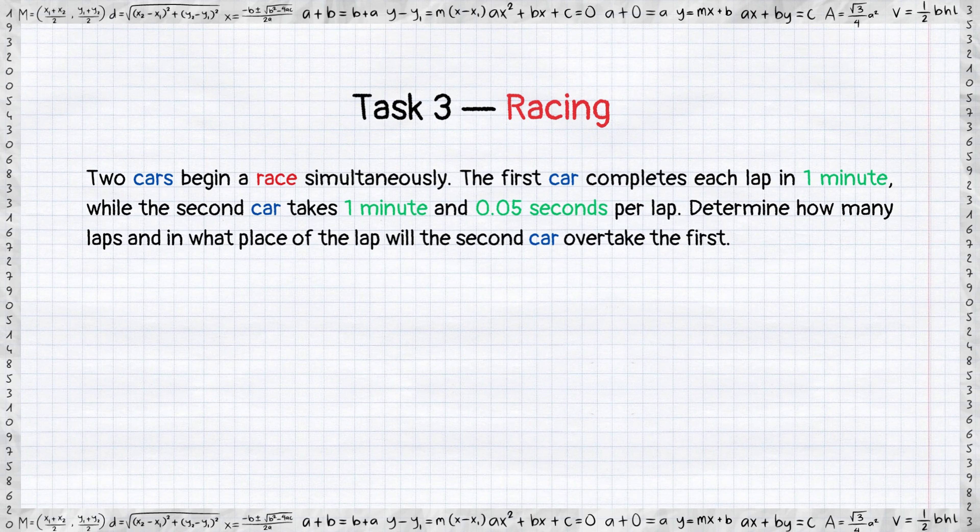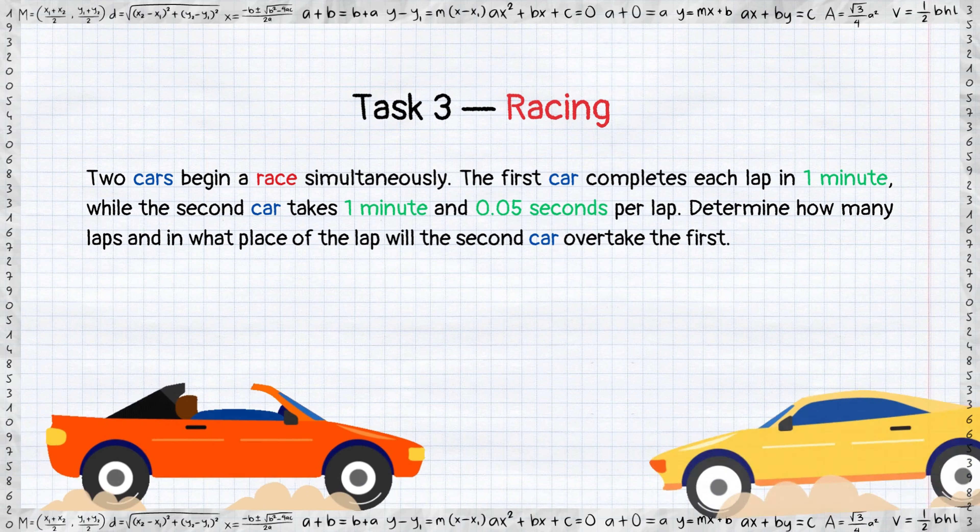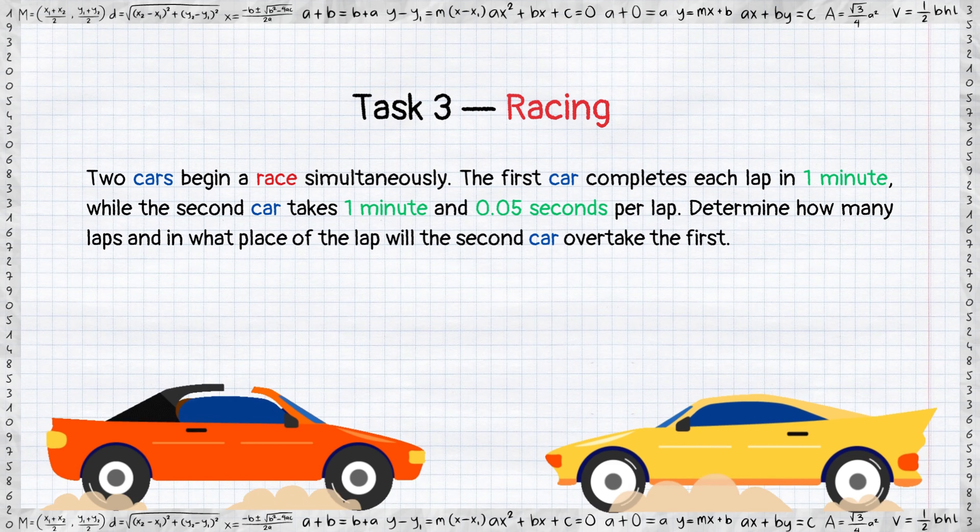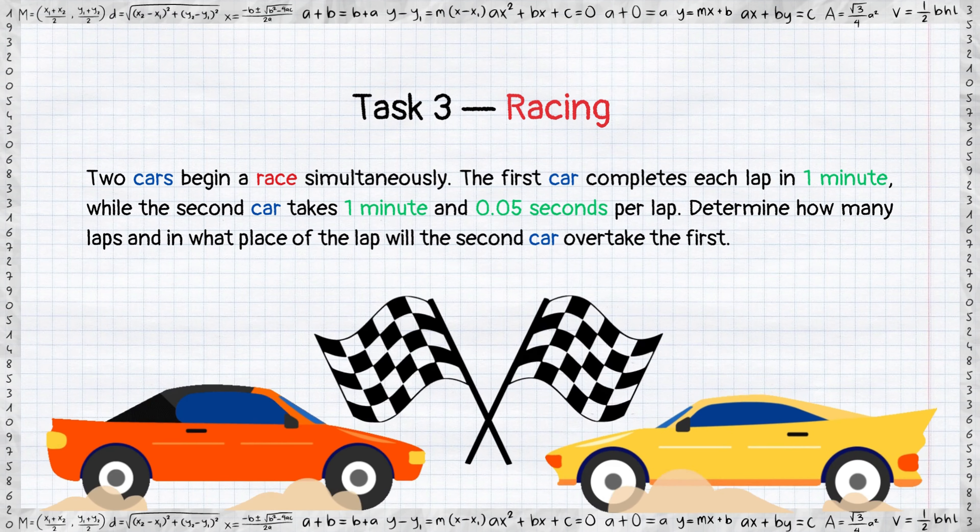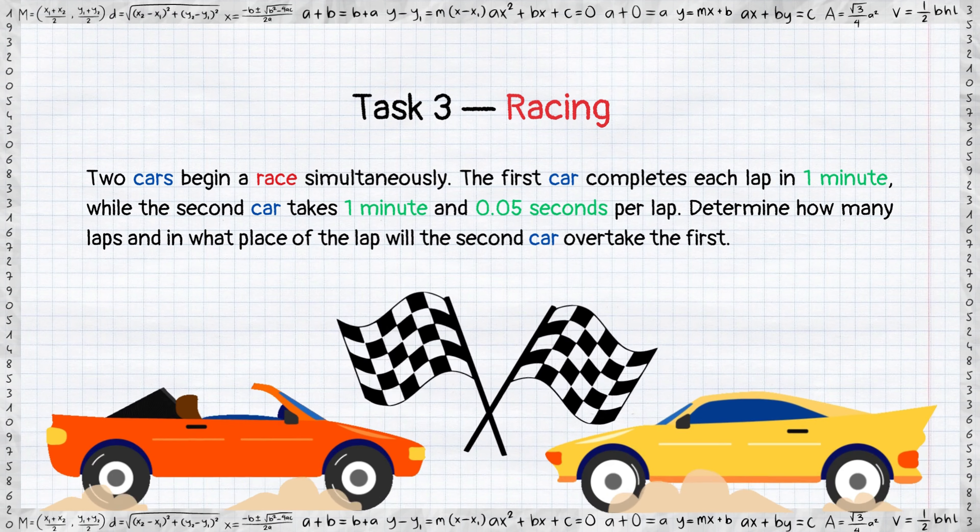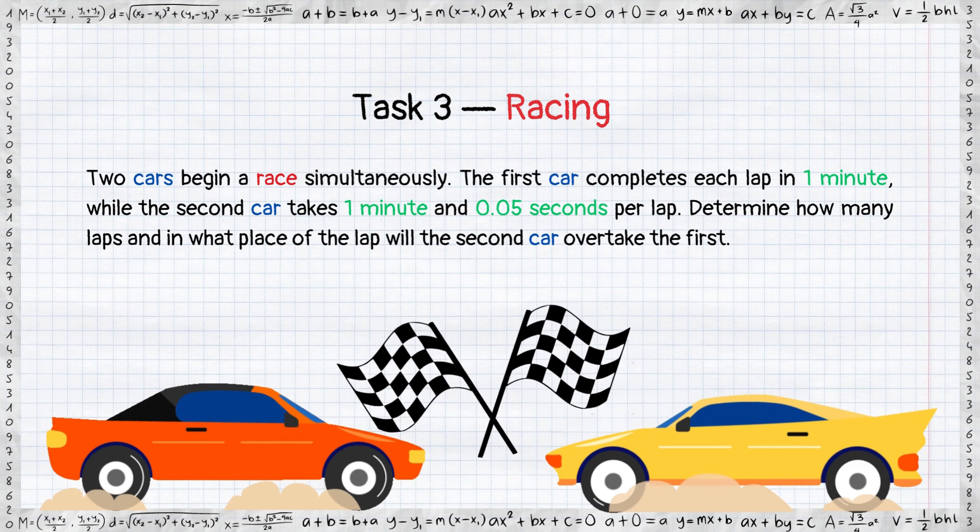Two cars begin a race simultaneously. The first car completes each lap in one minute, while the second car takes one minute and 0.05 seconds per lap. Find out how many laps and in what place of the lap will the second car overtake the first.